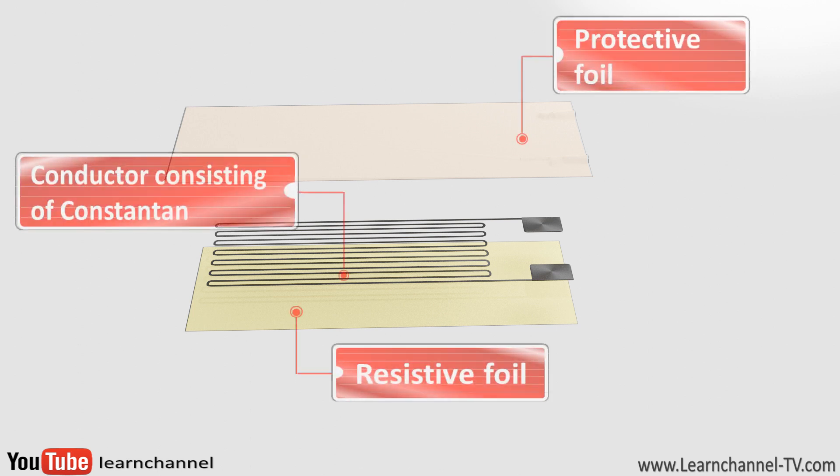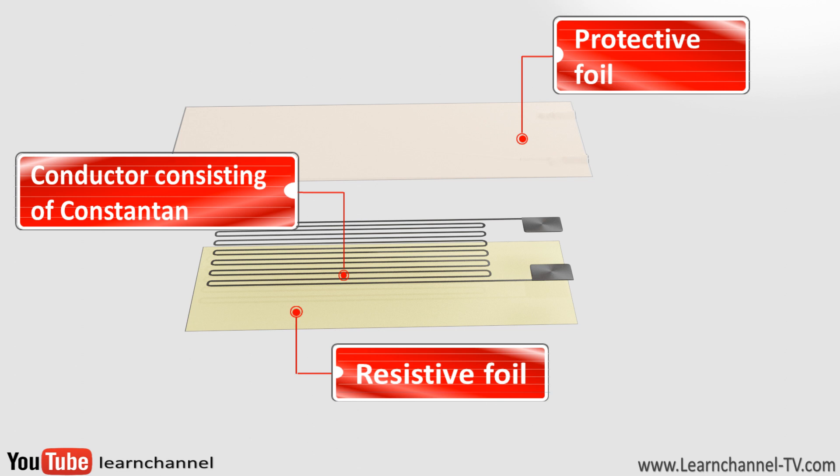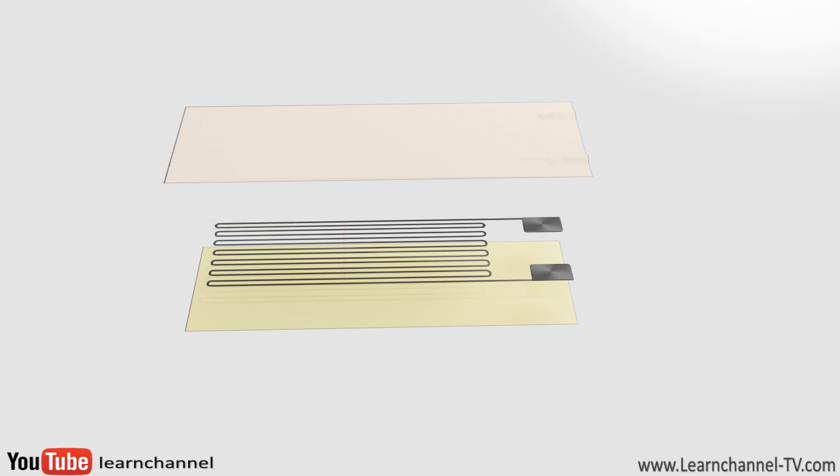The construction of an electrical strain gauge is simple. A wafer-thin conductor is placed on a carrier foil. Constantin, a copper-nickel alloy, is often used for the conductors because of its high temperature stability.